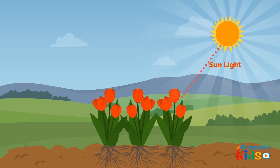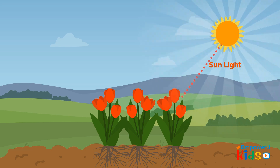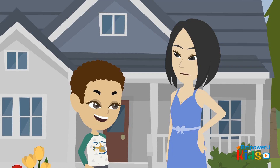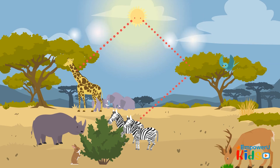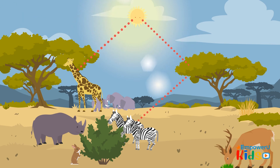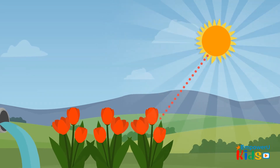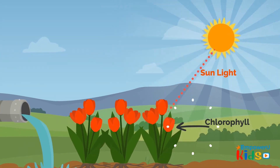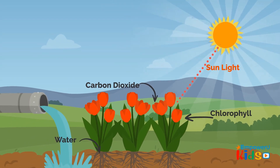Green plants use sunlight to make their own food. Photosynthesis is necessary for life on earth — without it there would be no green plants, and without green plants there would be no animals. Photosynthesis requires sunlight, chlorophyll, water, and carbon dioxide gas.